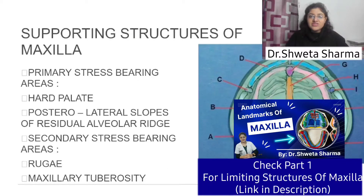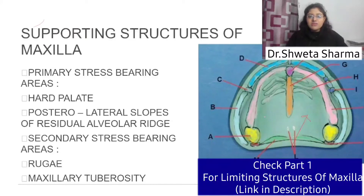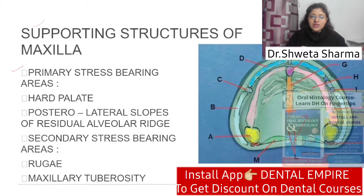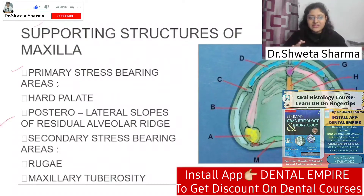We have covered limiting structures or border areas. Now, the second topic is the supporting structures of the maxilla. When we make a complete denture, we need to identify which structures we can utilize. First is the primary stress bearing area — how much force it can take. Second is the secondary stress bearing area.